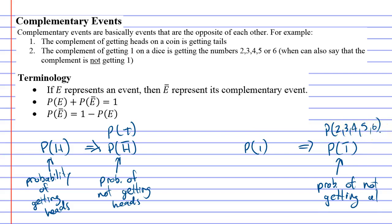And what you'll notice is, here's some terminology, when you have the probability of an event and you add it to the probability of its complement, it will equal one.